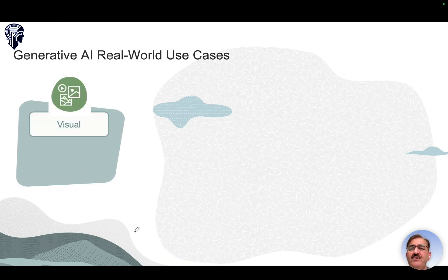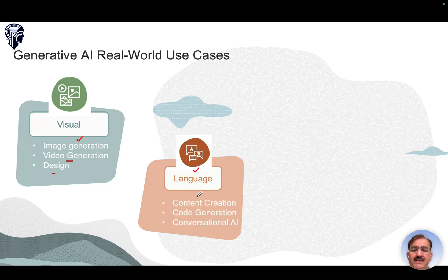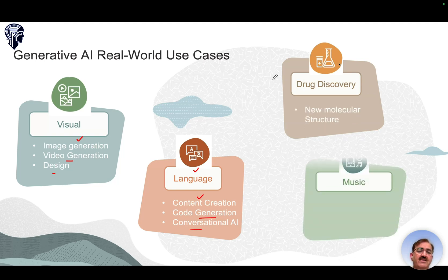Generative AI has real-world use cases across many domains. In visual representation: image generation, video generation, and design. In language: content generation, code generation, and conversational AI. It is also used for drug discovery — generating new molecular structures — and in music for synthetic music generation or new music synthesis.